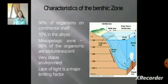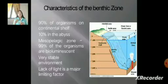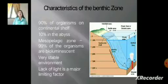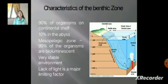The characteristics of the benthic zone include 90% of organisms found on the continental shelf and 10% in the abyss. In the mesopelagic zone, 99% of organisms are bioluminescent, producing light by chemical reactions. It is a very stable environment where pressure increases with depth, and lack of light is a major limiting factor.